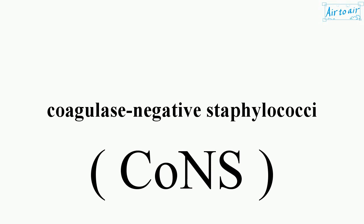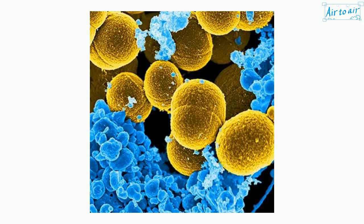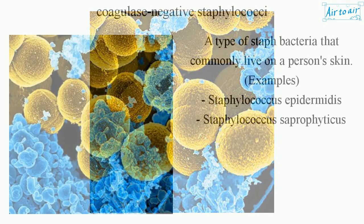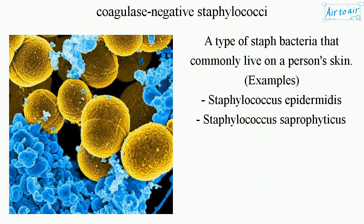Coagulase negative staphylococci are a type of staph bacteria that commonly live on a person's skin. Examples include Staphylococcus epidermidis and Staphylococcus saprophyticus.